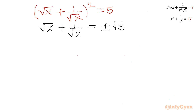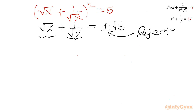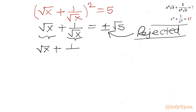Since both √x and 1/√x are positive for positive x, their addition cannot be negative. So the negative value is rejected, and we accept √x + 1/√x = +√5.